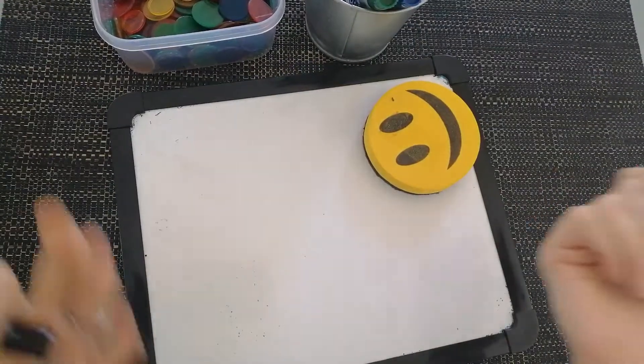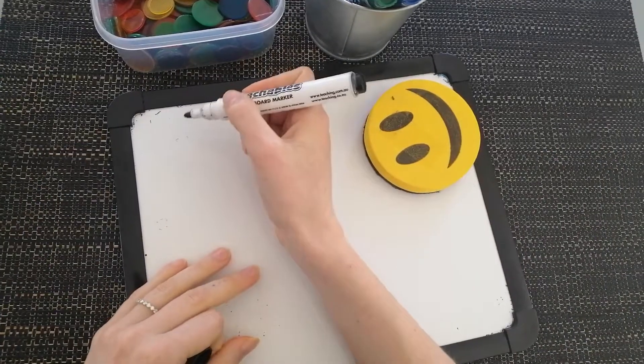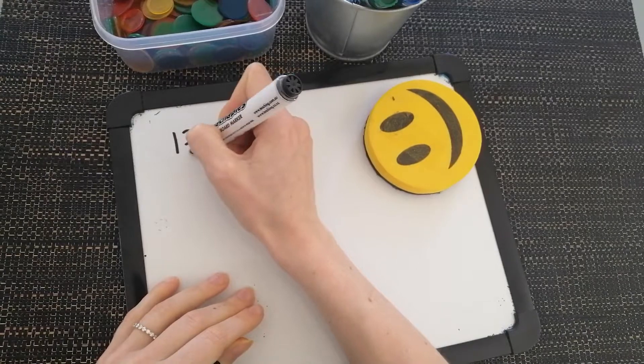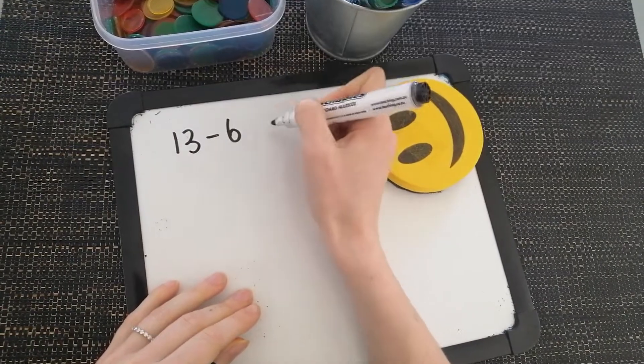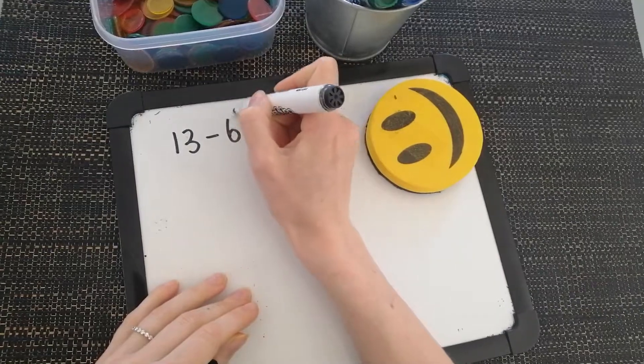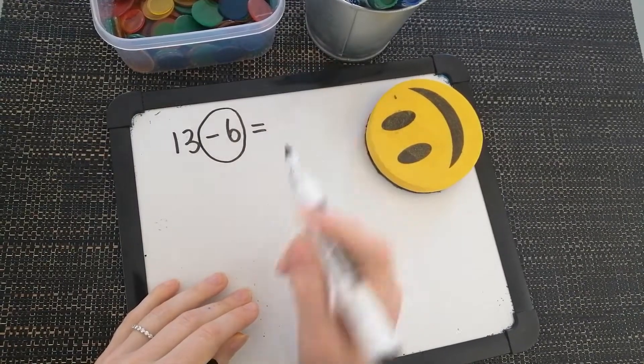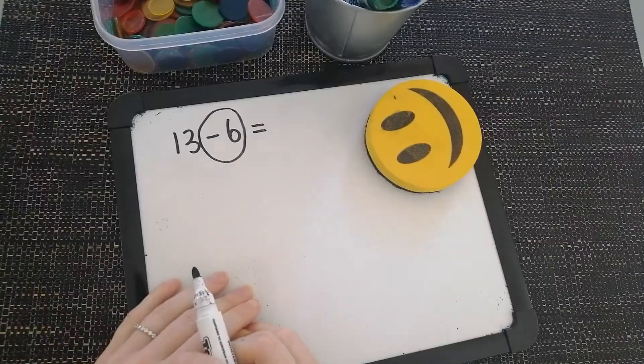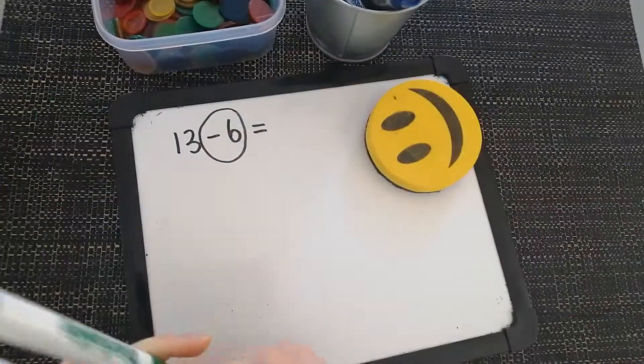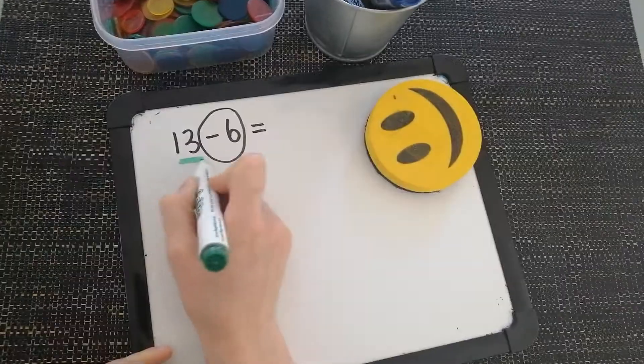So Mr. Hanky is going to start. Let's say our first subtraction problem or our first number sentence is 13 take away 6 equals. This is my take away symbol. This tells me how many I need to get rid of. I need to subtract and this first number tells me how many I start with.